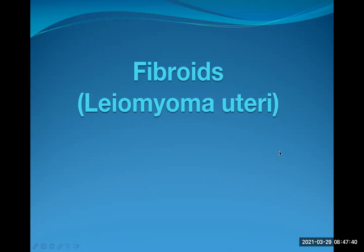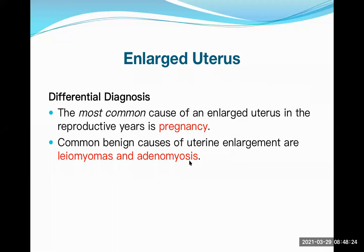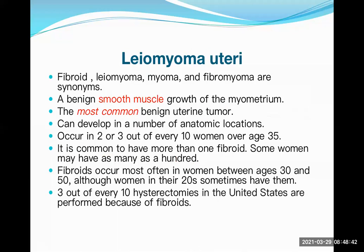These are very important topics from the exam point of view. Before we enter the topic properly, what are the common differential diagnoses of enlarged uterus? Number one is pregnancy — the most common cause of enlarged uterus in the reproductive years. Apart from that, pathological causes include leiomyoma, adenomyosis (endometrial glands growing inside the myometrium), endometrial carcinoma, and endometrial hyperplasia, which can cause slight enlargement.